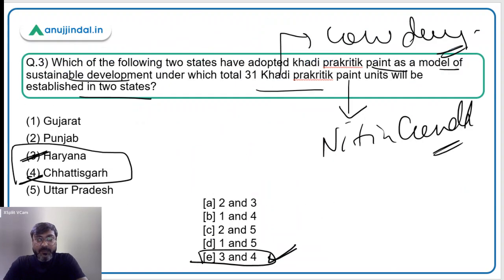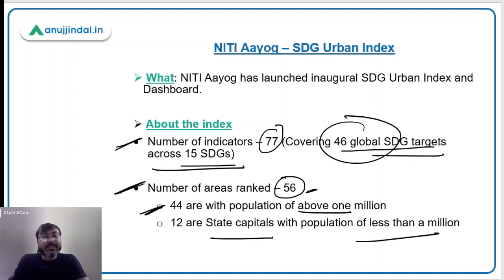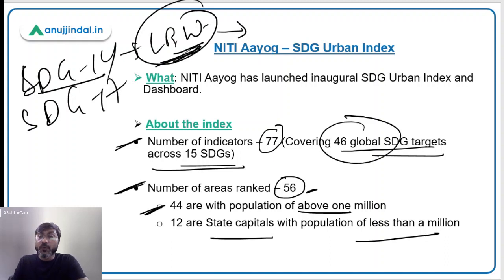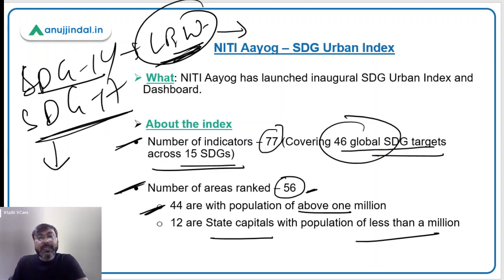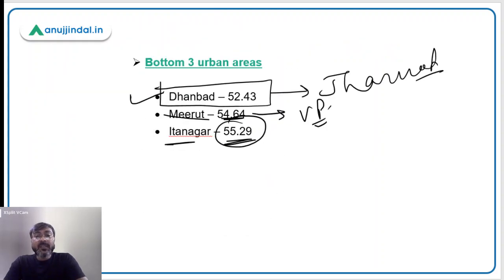Coming back to question number 1 — an additional detail: the 77 indicators cover 46 global SDG targets across 15 SDGs, excluding two SDGs: SDG 14 (Life Below Water) and SDG 17 (Partnerships for the Goals). SDG 14 is excluded because it concerns only coastal areas and most selected cities are not coastal. SDG 17 is excluded because its progress is monitored at the national level, not the urban level.